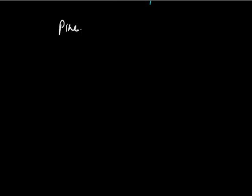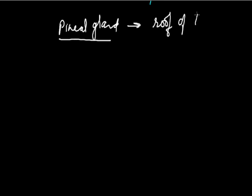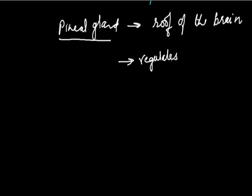The pineal gland is a small, reddish-gray gland about the size of a pea. It is attached to the roof of the brain. It contributes to the development of gonads — that is, it regulates gonadal development.